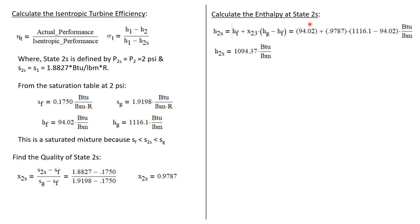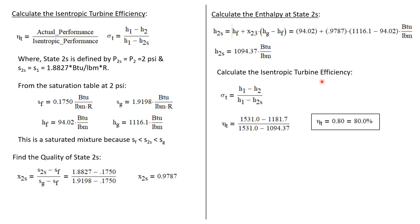Now we can calculate the isentropic turbine efficiency: (H1 minus H2) divided by (H1 minus H2S). With all those values known, the isentropic turbine efficiency is 80%. That is to say, the actual turbine process achieves 80% of the performance of a turbine undergoing an isentropic — perfectly idealized — process. So we're achieving 80% of perfection with this turbine.